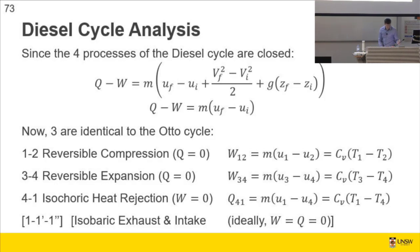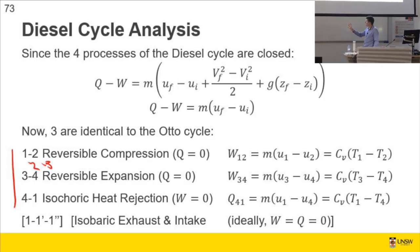So there's four processes. Three are the same as the Otto cycle. Reversible compression, reversible expansion, and isochoric heat rejection. What's missing from this list is process two to three. And those things for a closed system ideally all look like the equations on the right. So it's Cv times the difference in temperatures.